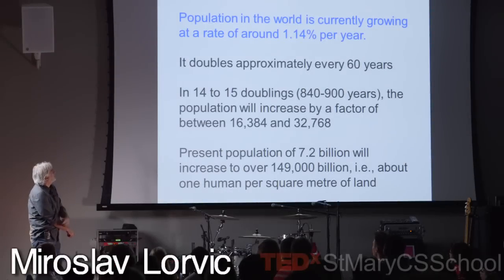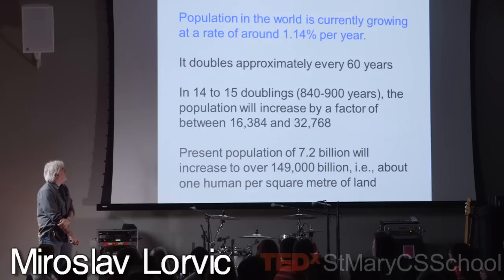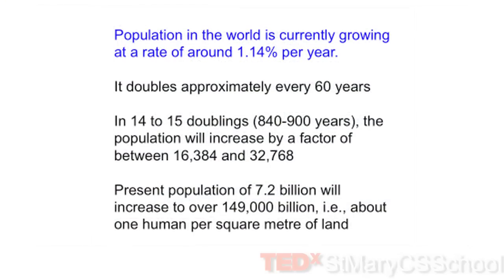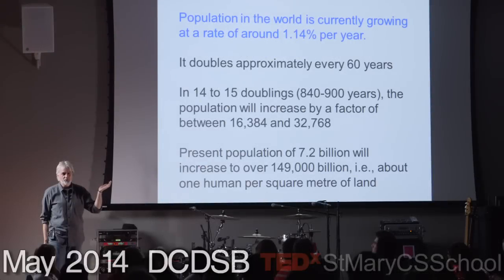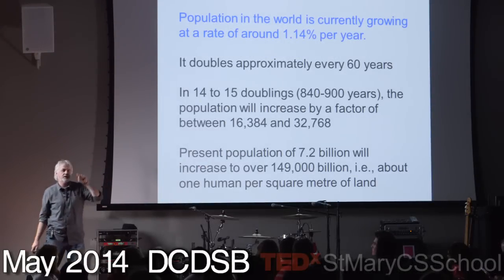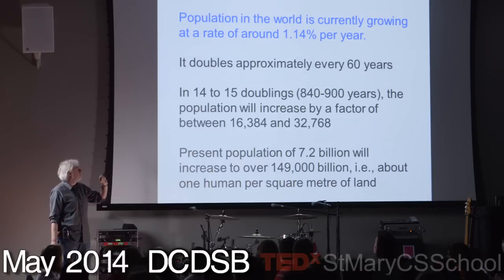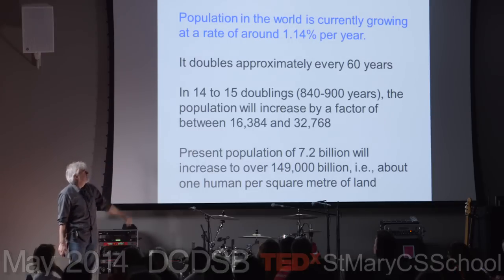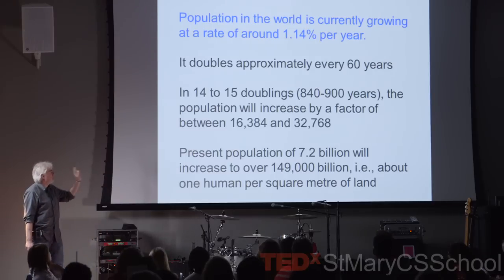The population of the world is currently growing at a rate of about 1.14% per year. Do a little math and you'll realize that in 60 years it will double. In another 60 years it will double again — that's 2 times 2, which is 2 squared, or 4. In 14 to 15 doublings, that's 2 times 2, 14 to 15 times, it will increase between 16,000 and 32,000 times.